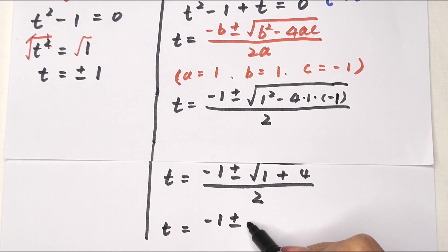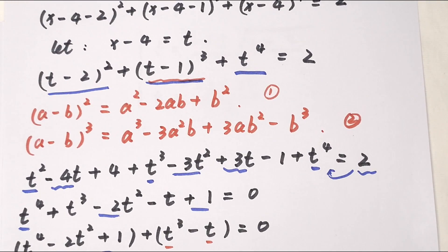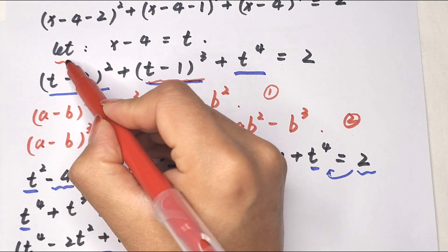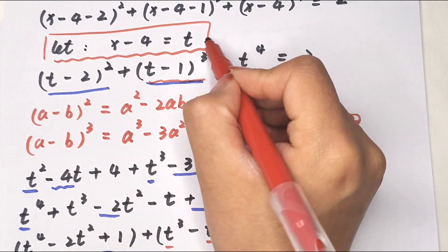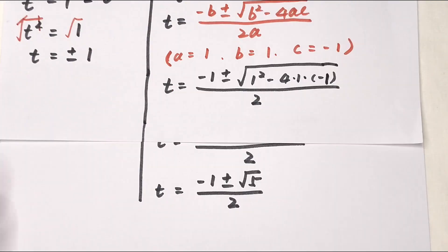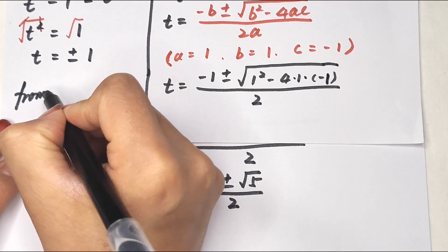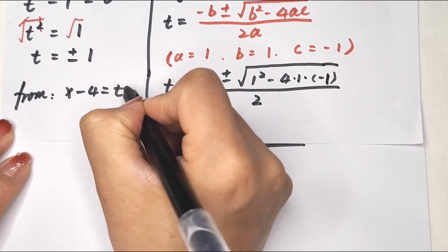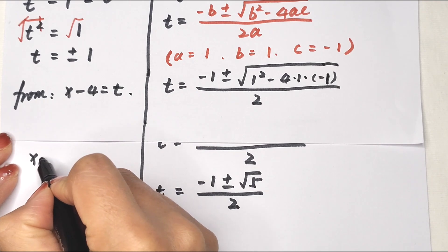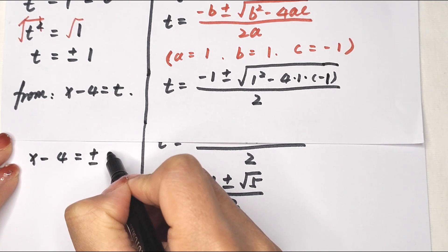So t equals negative 1 plus or minus square root of 5, divided by 2. Since we let x minus 4 equal t, we now back-substitute. From x minus 4 equals plus or minus 1, we get x minus 4 equals 1 or x minus 4 equals negative 1.